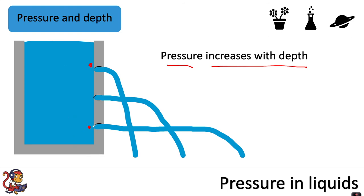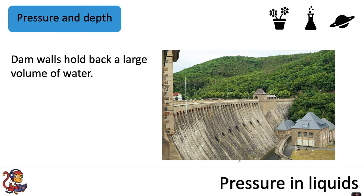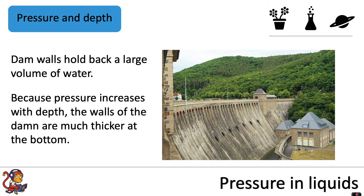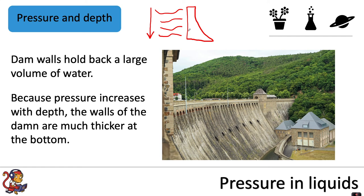At the bottom hole we get a much greater force pushing out the water, so it travels a lot further. This is really important to consider for engineers building dams, because dams hold back a large volume of water. Because pressure increases with depth, you can see in the picture that the walls are much thicker at the bottom. The dam might have a shape where the wall is thin at the top and much thicker at the bottom, because all of the water behind it creates a lot more pressure at the bottom of the wall than at the top.